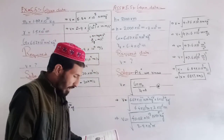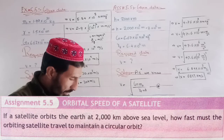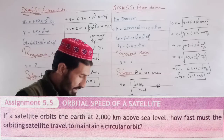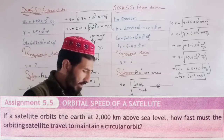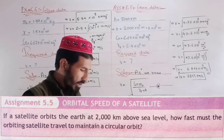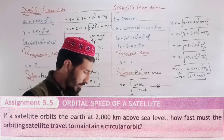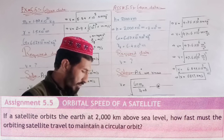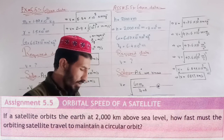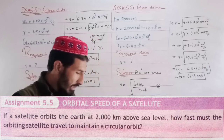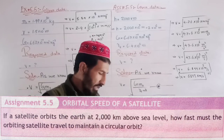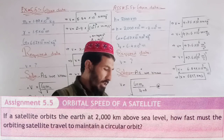Now for Assignment 5.5: the orbital speed of a satellite. If a satellite orbits the Earth at 200 km above sea level, how fast must the orbiting satellite travel to maintain a circular orbit?